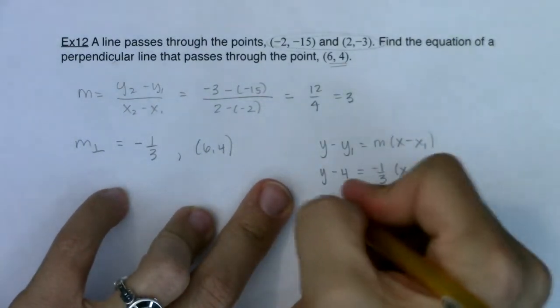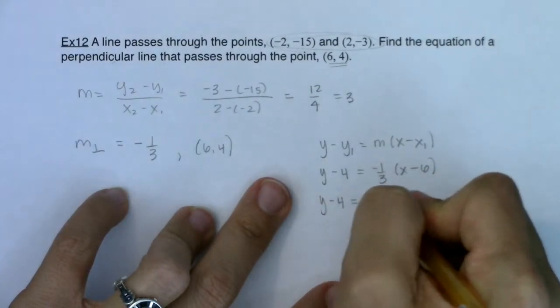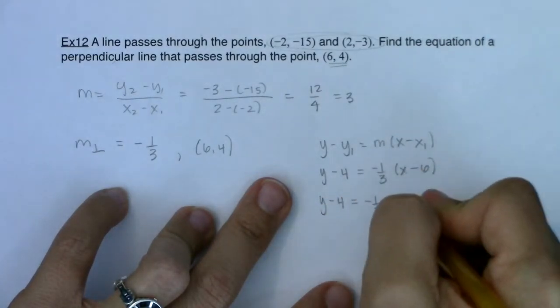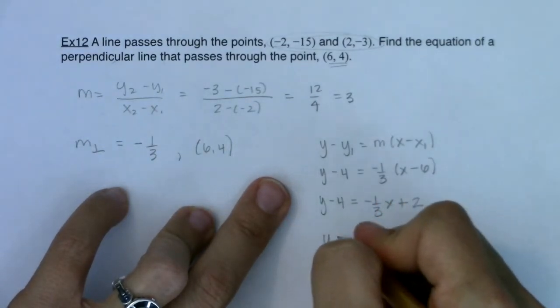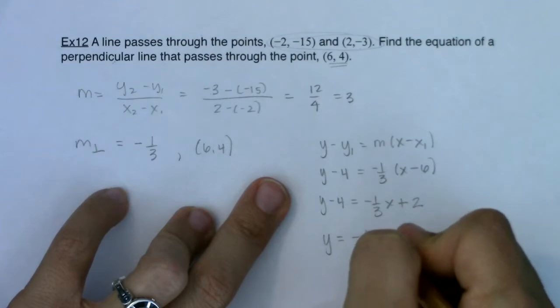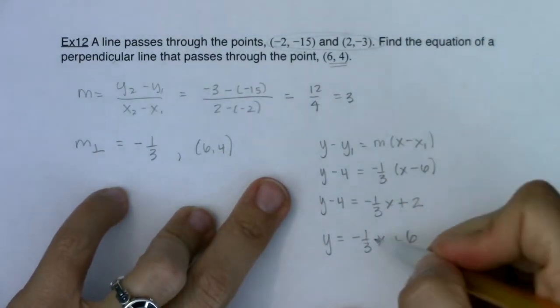Let's play this out. We're going to have y minus 4 equaling (-1/3)x. (-1/3) times (-6) is positive 2. And when I move this over, I would ultimately have y equals (-1/3)x plus 6.